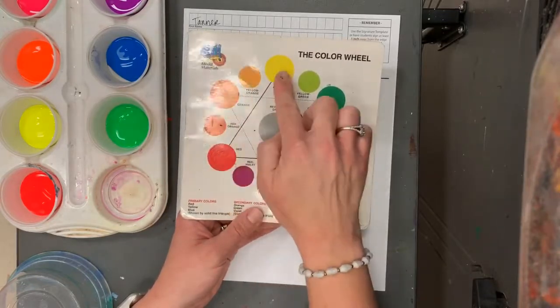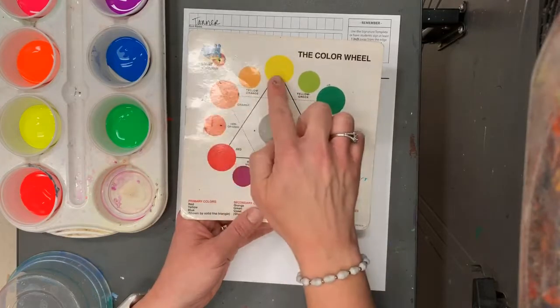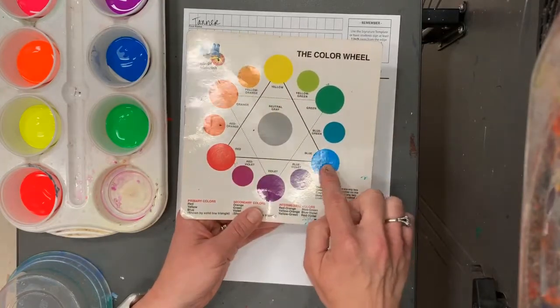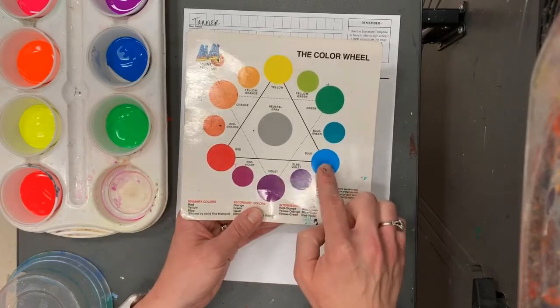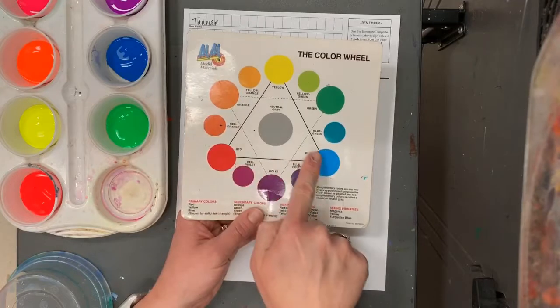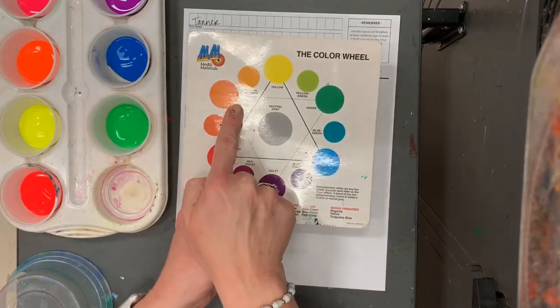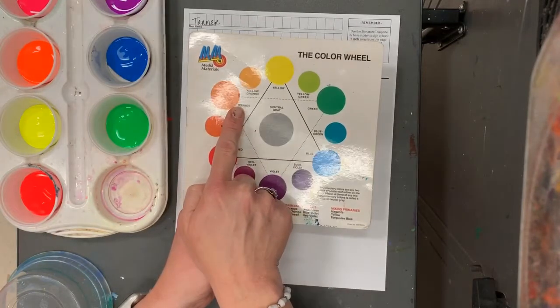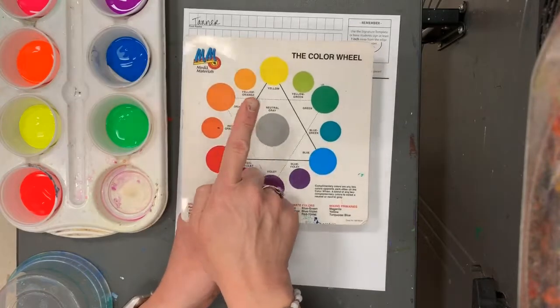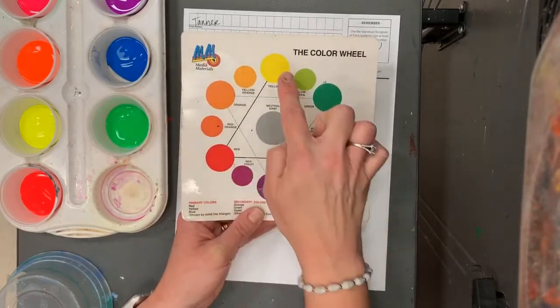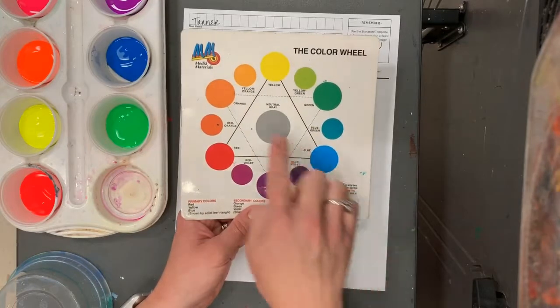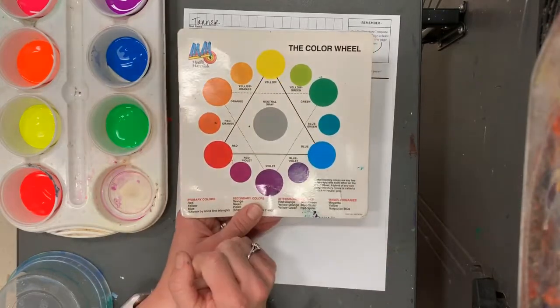Colors that are next to each other on the color wheel like yellow and orange will go well together. Blue and purple will go well together because they're next door neighbors. Blue and orange are across from each other. They are called complementary colors. They will not go well together. Right above my board is the complementary poster. You see red and green, yellow and purple and blue and orange. Those colors don't go well together either.